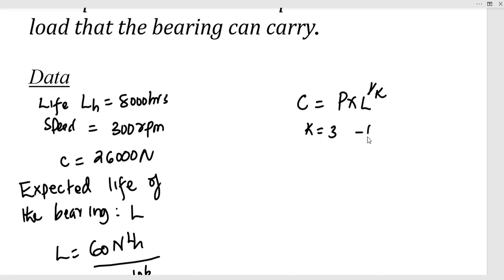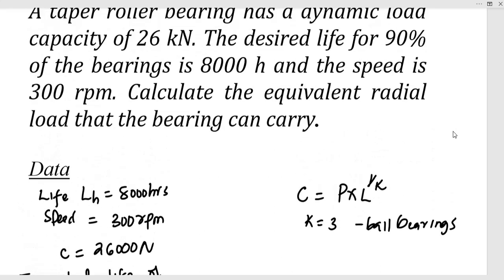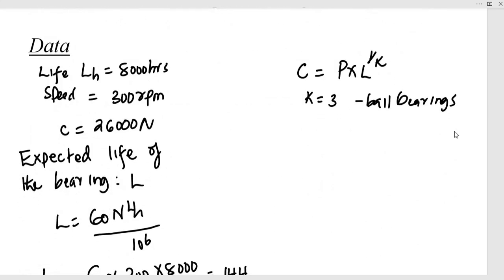And we are told that this is a roller bearing. And we know that K is equal to 10 out of 3 for roller bearings. So P is the equivalent radial load, L is the rating life in terms of million revolutions, and C is the dynamic load of the bearing.